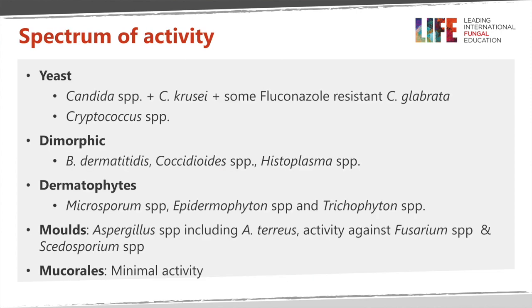In terms of the spectrum of activity, voriconazole works against most Candida species, including some fluconazole-resistant Candida glabrata, and it also works for Candida krusei which is always fluconazole resistant. It has good activity against Cryptococcus — voriconazole gets into the brain, which is helpful in some patients. It has modest activity against the dimorphic fungi: blastomyces, coccidioides, and histoplasma.